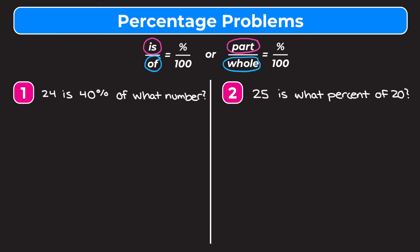Let's jump into number one. Number one says: 24 is 40% of what number? We need to look at this problem and pick out all the different parts of our proportion to plug in. So 24 is right next to 'is,' so 24 is our 'is' or our part. 40% is obviously our percent. And 'of what number' — we're solving for what number, and it's next to 'of,' so that's our whole. Our whole is going to be our variable x.